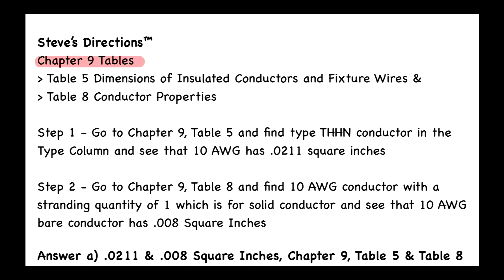We're going to Chapter 9 — that's called 'The Tables.' The first table we're going to look at is Table 5, which is called 'Dimensions of Insulated Conductors and Fixture Wires.' Put the video on pause and let's go to Table 5 together.